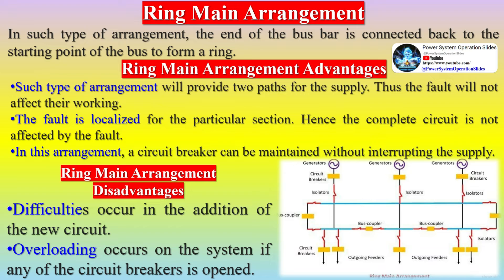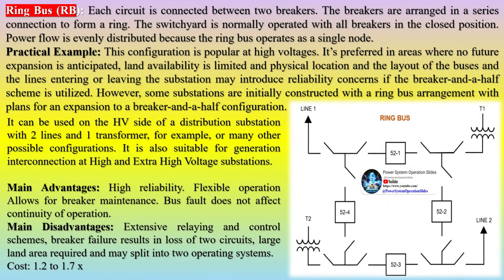In the ring main arrangement, the end of the busbar is connected back to the starting point of the bus to form a ring. Advantages include: such arrangement provides two paths for supply, so a fault will not affect working; the fault is localized to the particular section so the complete circuit is not affected; and a circuit breaker can be maintained without interrupting the supply. Disadvantages include: difficulties occur in the addition of new circuits, and overloading occurs on the system if any circuit breaker is opened.